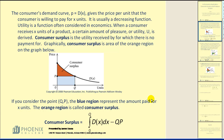If you consider the point (q, p), the blue region represents the amount paid for x units, and the orange region is your consumer surplus. To find the orange region, we take the integral of the demand function from zero to q, and then subtract out the area of the rectangle, which is q times p.